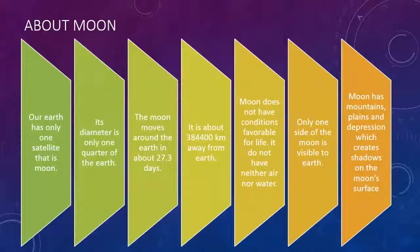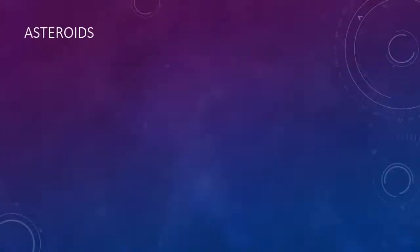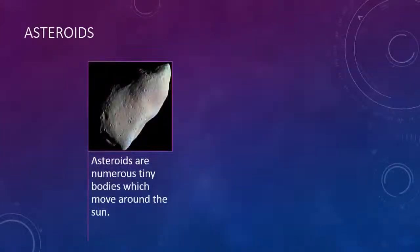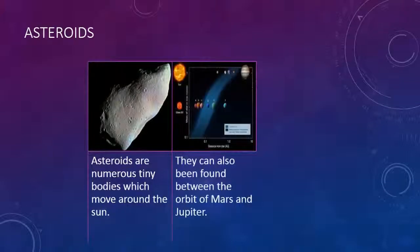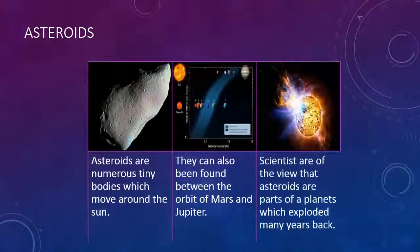Asteroids: Asteroids are numerous tiny bodies which move around the Sun. They can also be found between the orbits of Mars and Jupiter. Scientists are of the view that asteroids are parts of planets which exploded many years back.